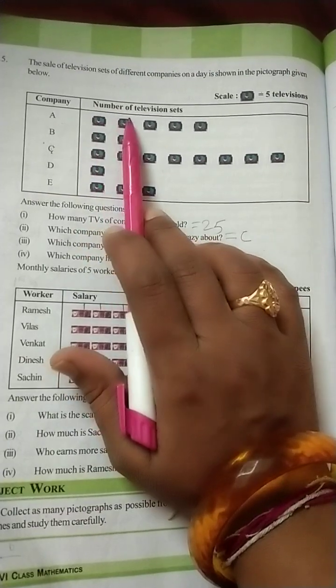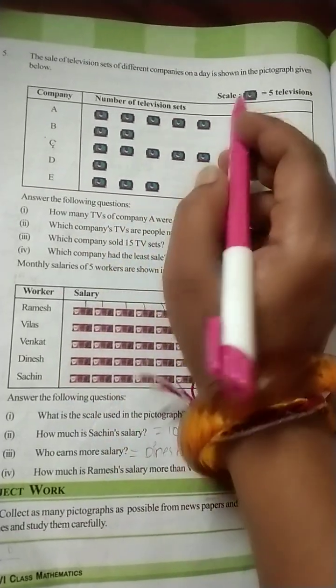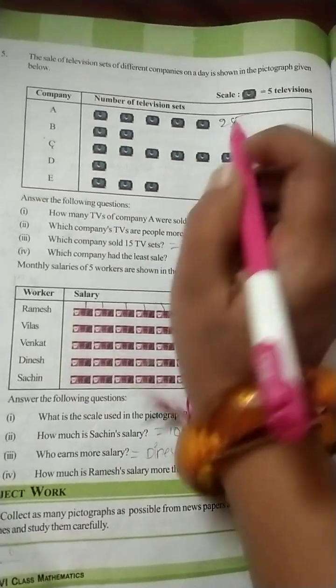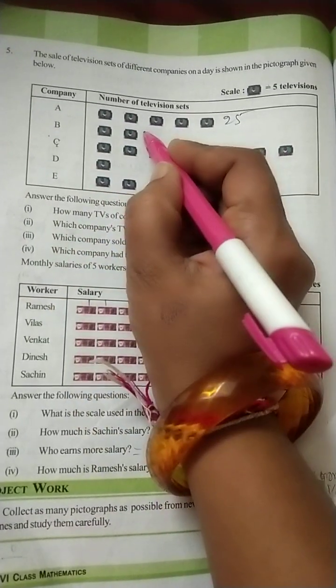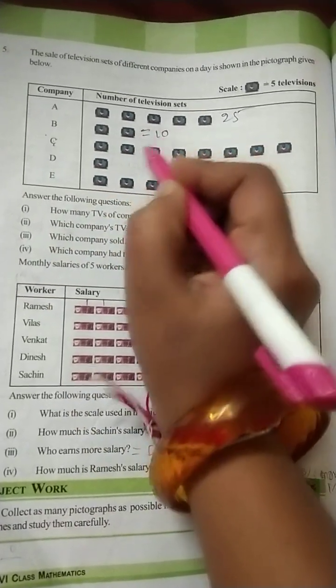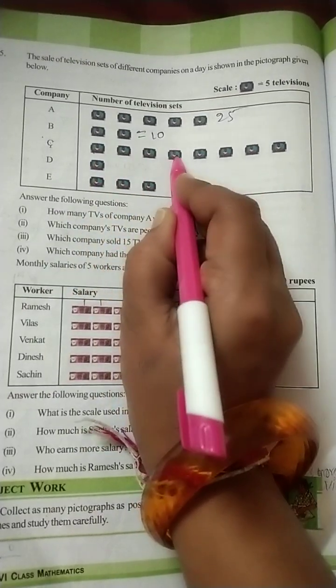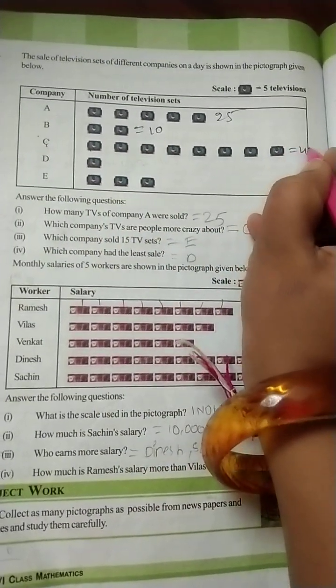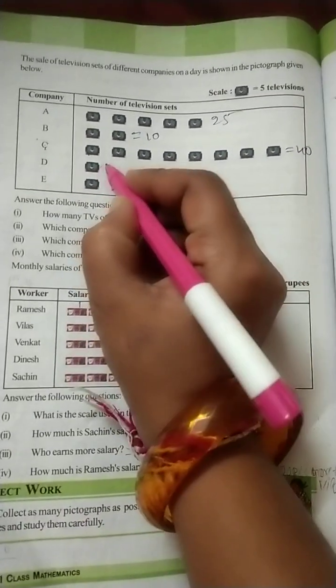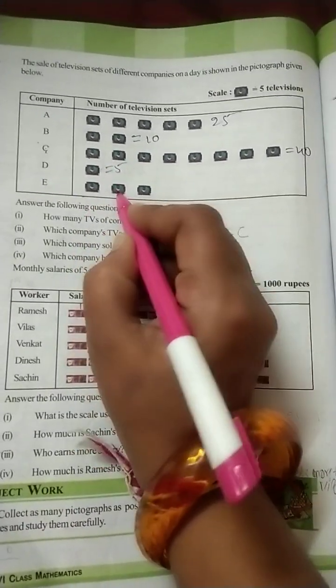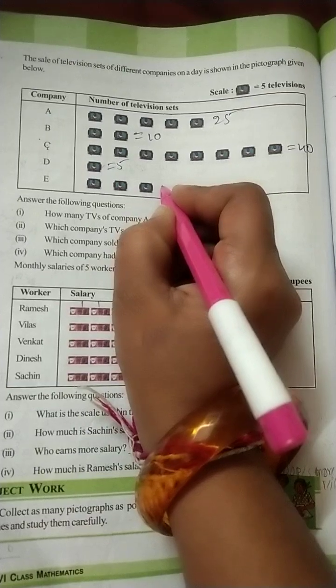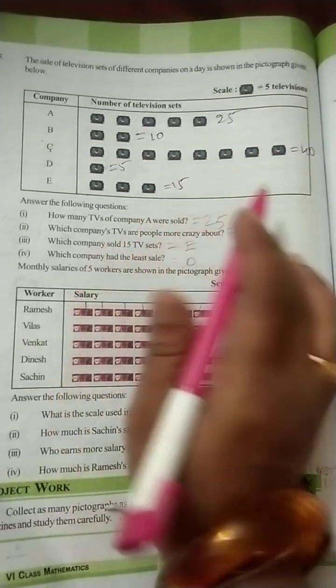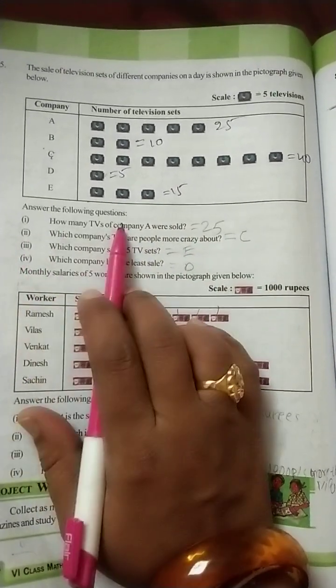So here 1, 2, 3, 4, 5. Five 5s are 25. 25 televisions are there. Here 1, 2, 3, 4, 5, 6, 7, 8. Eight 5s are 40. Here 1, 2, 3. Three 5s are 15. Now you can write it like that. Now answer the following questions.